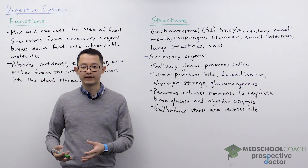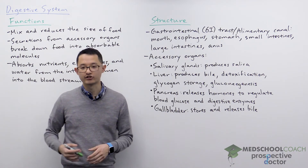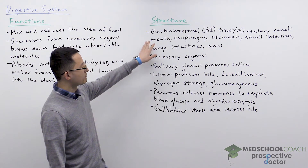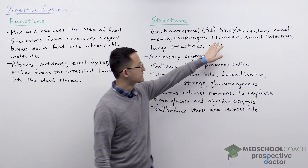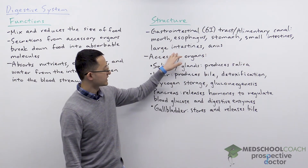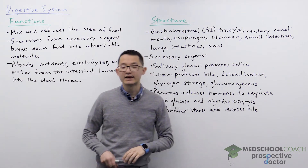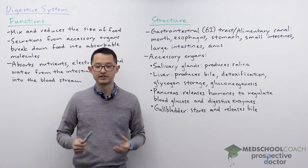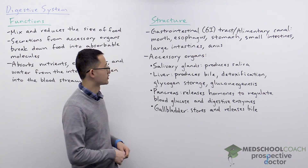The accessory organs secrete compounds that aid in the digestion of the food particles. The GI tract starts with the mouth and progresses to the esophagus, stomach, small intestines, large intestines, and ends with the anus. In subsequent videos we're going to go through each of these structures in more detail to discuss what their specific roles are in digestion.